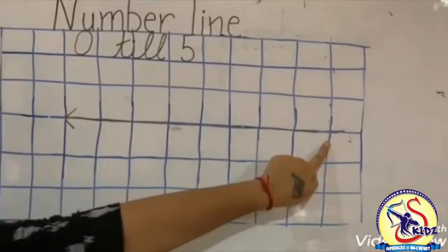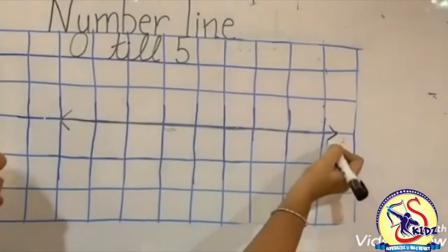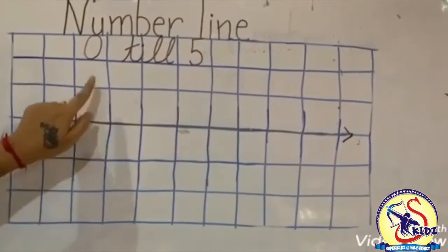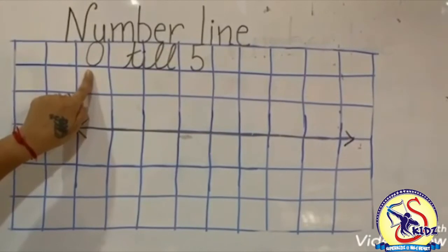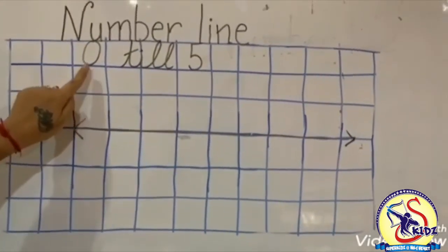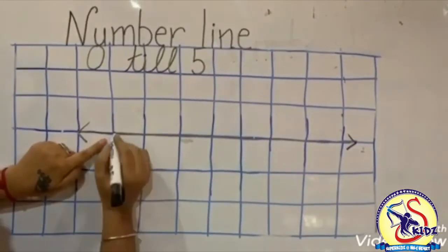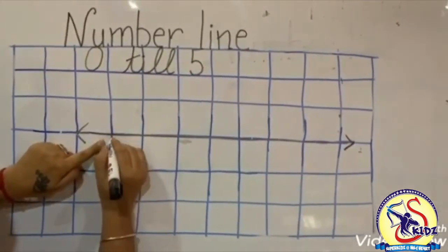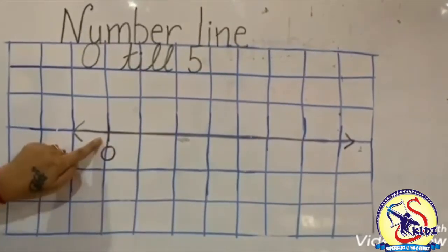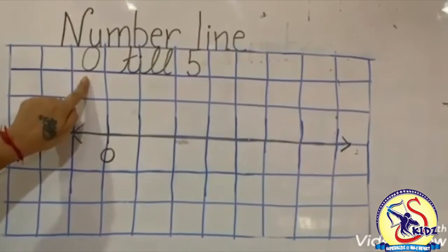At the end of the line also, we will draw an arrow. Now we need to see from which number we need to start. We will start from 0 because 0 is written here. At the very first box, we will make a standing line and write number 0, as the line starts from 0.